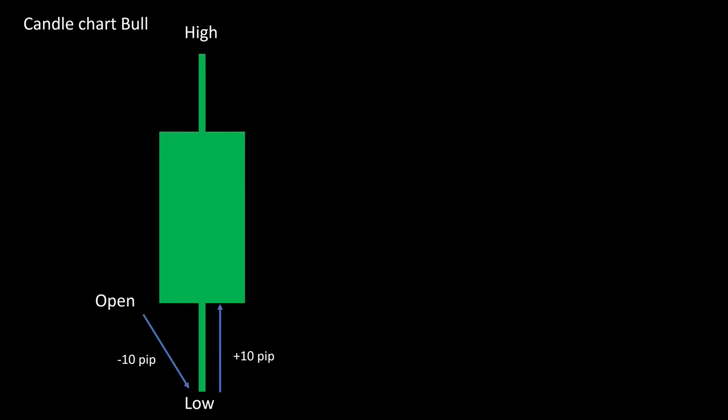Now let's get to the strength calculation of the normal candle. The price runs from open to low and back to open again. For this reason, this movement is rated neutrally. The price continues upwards to the later close point, then 10 pip high and 10 pip close. This movement is also rated neutrally.